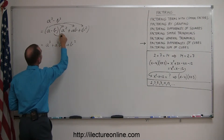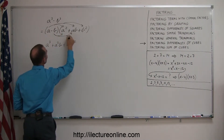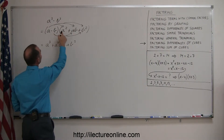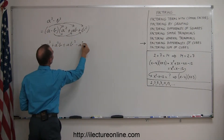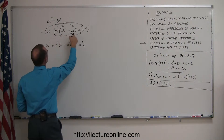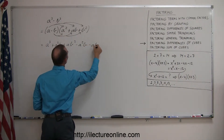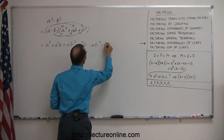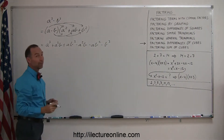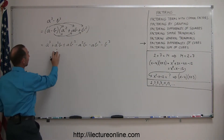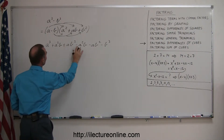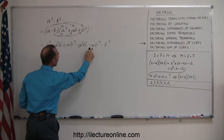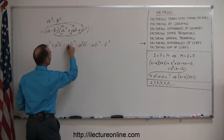Then we take the second term and multiply it times each term in the trinomial. So minus B times A squared is minus A squared B; minus B times AB is minus AB squared; and minus B times B squared is minus B cubed. When we combine like terms, the plus A squared B and minus A squared B cancel out, and the plus AB squared and minus AB squared cancel out.